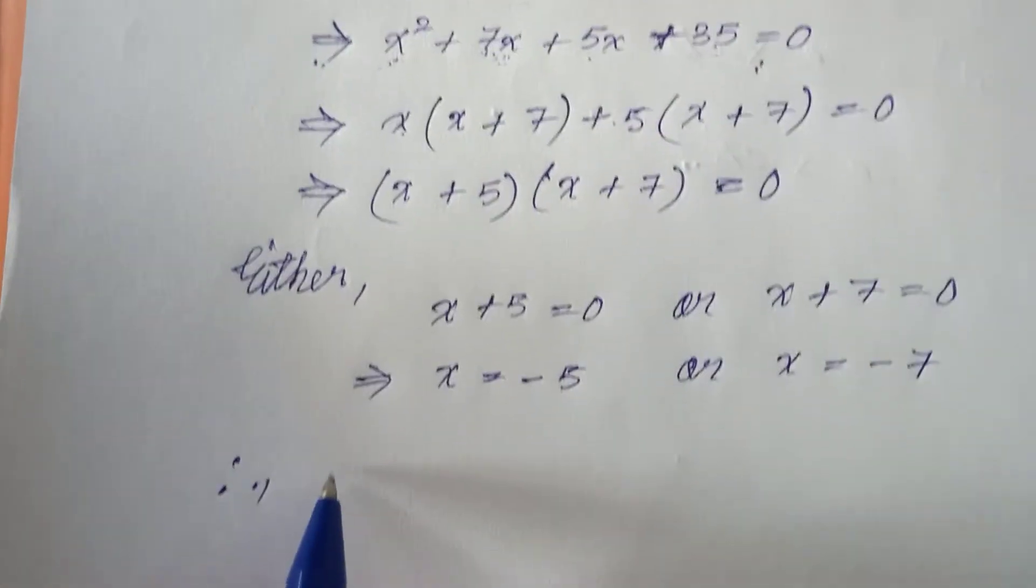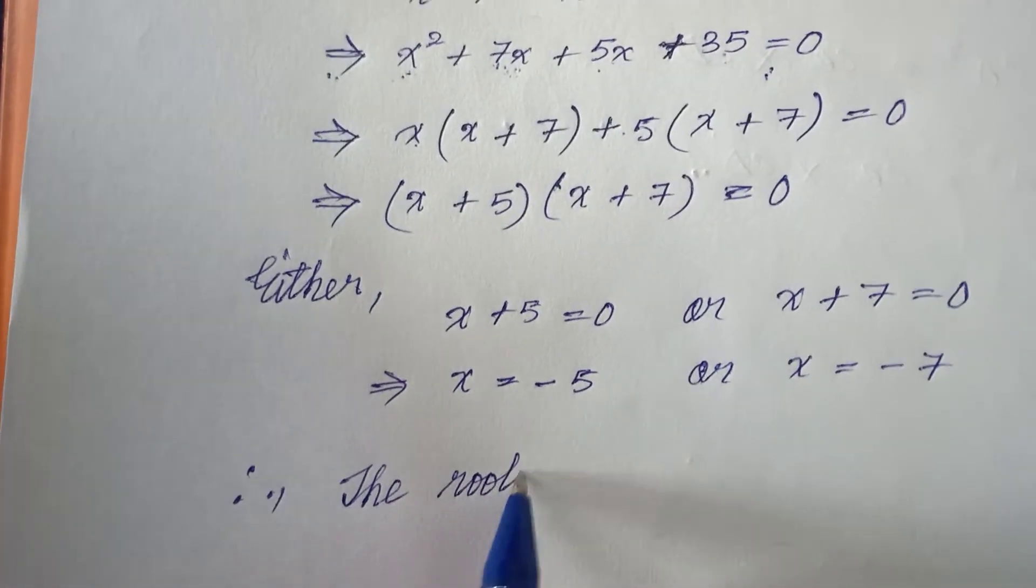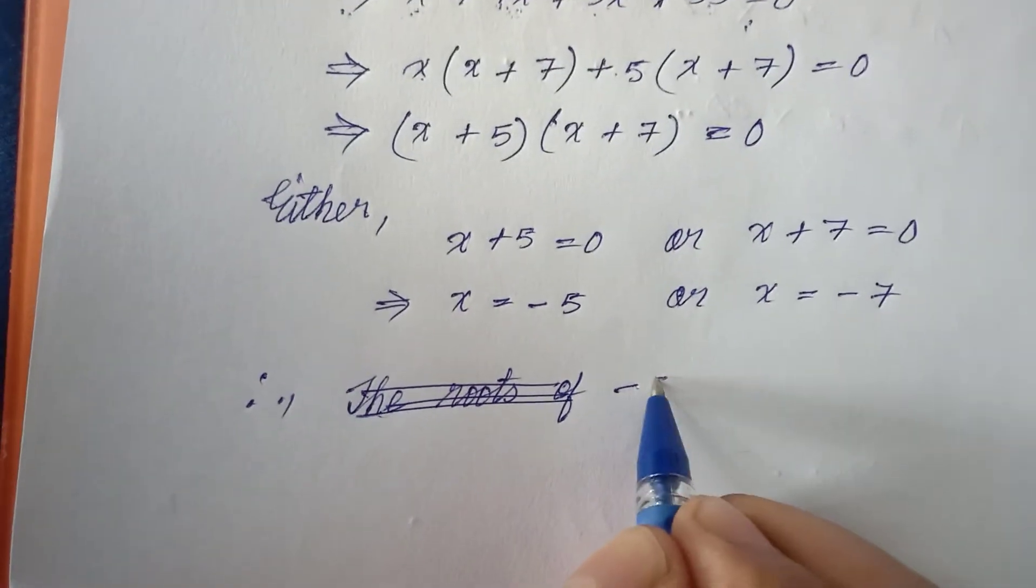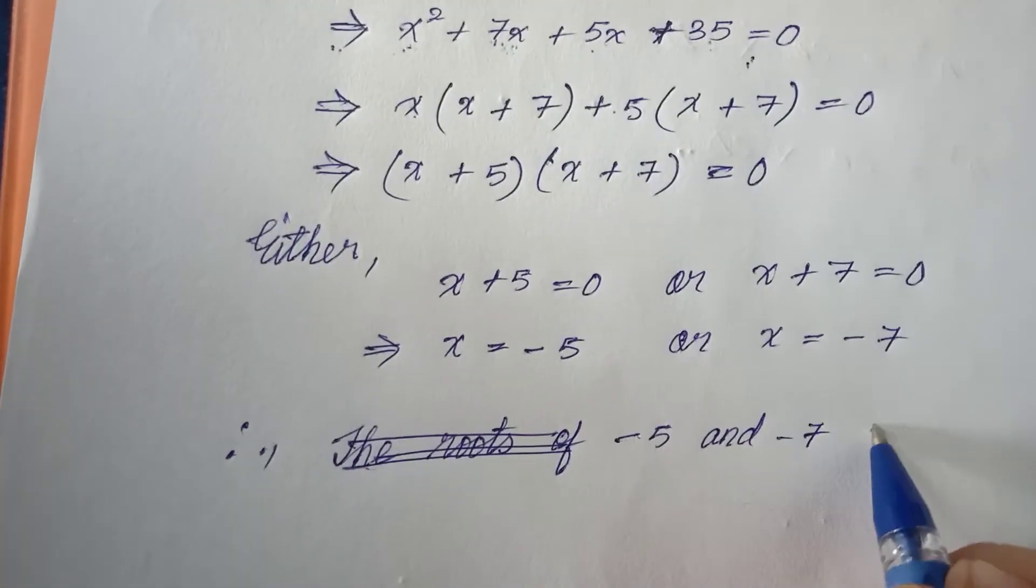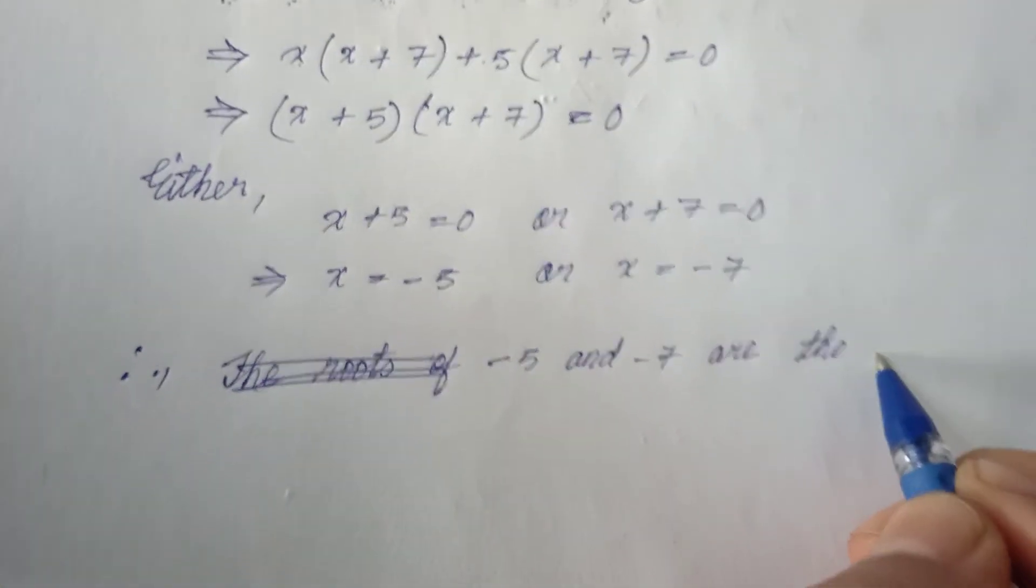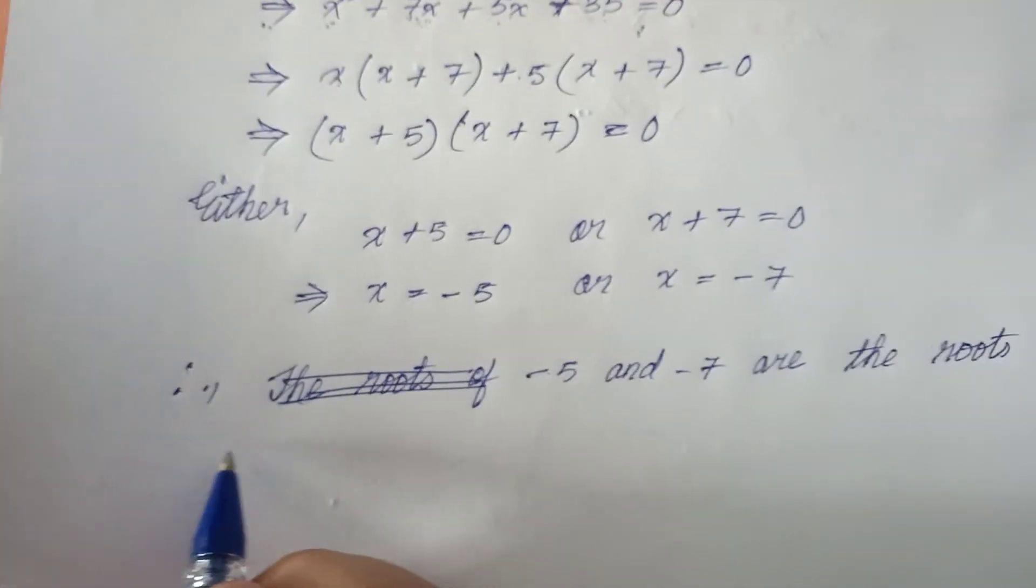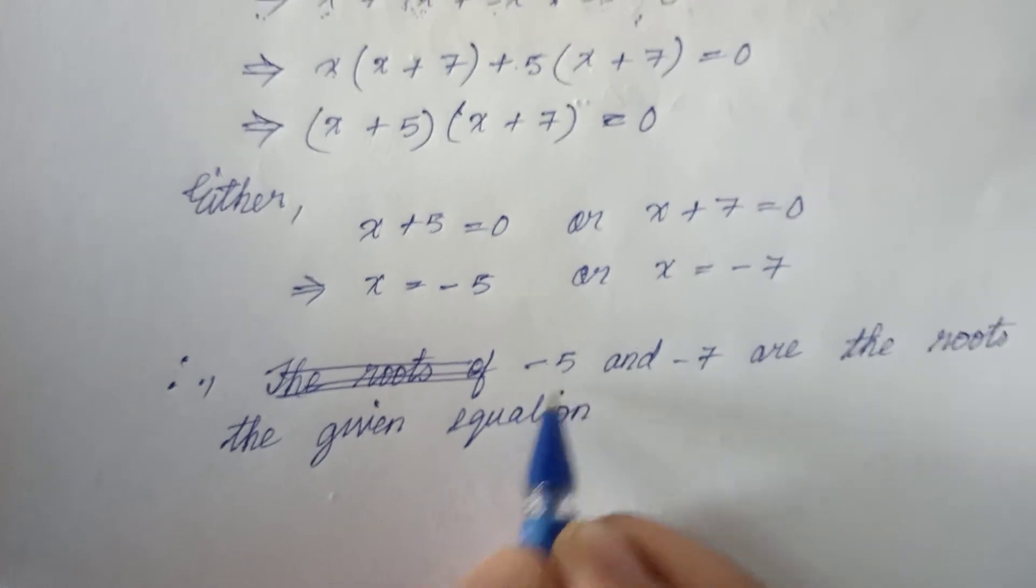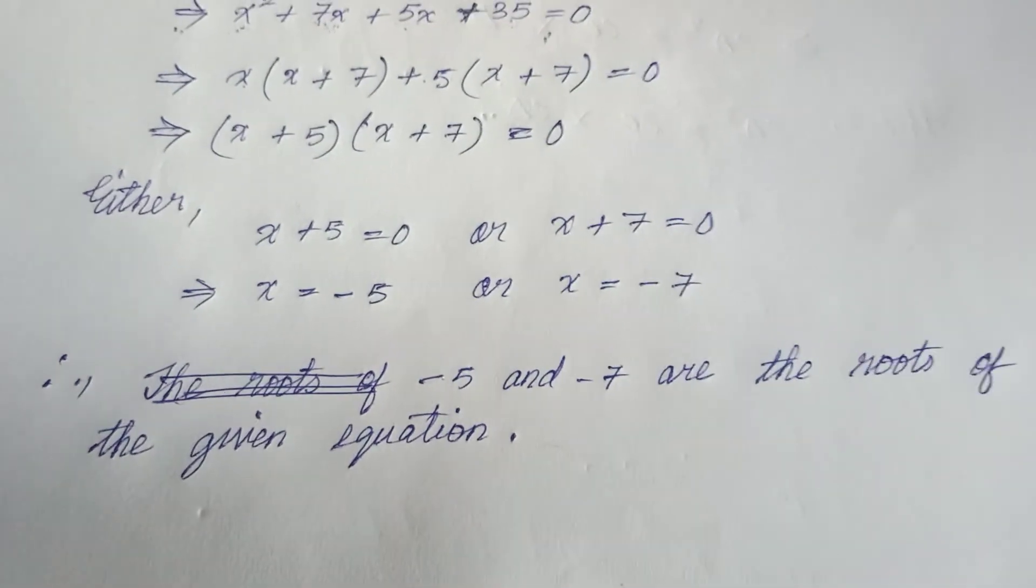Therefore, -5 and -7 are the roots of the given equation. You have to be very clear with quadratic equations because they are very important. That's all for today.